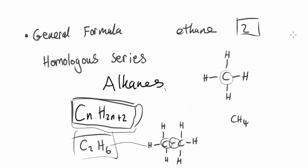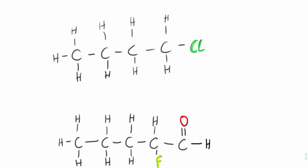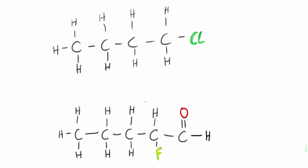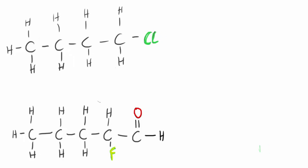Now let's take a look at skeletal formulas. Skeletal formulas are another type of formula, similar to displayed formulas, but you don't actually show the carbons. You also have a zigzag as you draw along the carbon chain. When you have a carbon chain in skeletal formulas, there are a couple of things you observe.